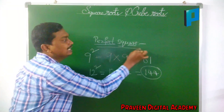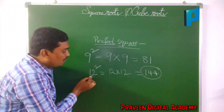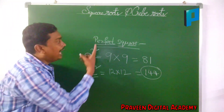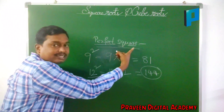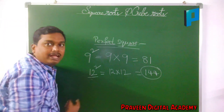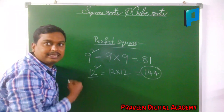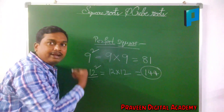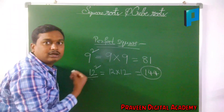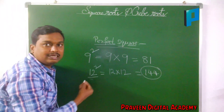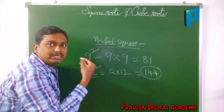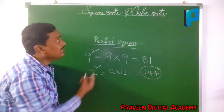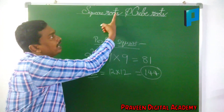Multiplying 12 two times, the solution we get is 144, and this 144 we say it as the perfect square of 12. A perfect square is nothing but multiplying any number two times. For example, 100 multiplied two times: 100 square gives 10,000, so 10,000 is a perfect square of 100.